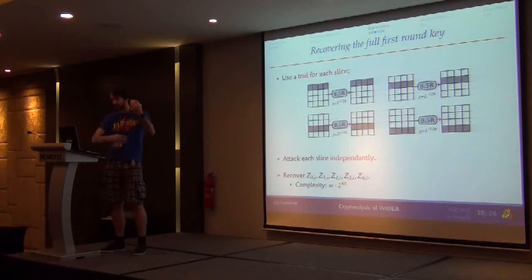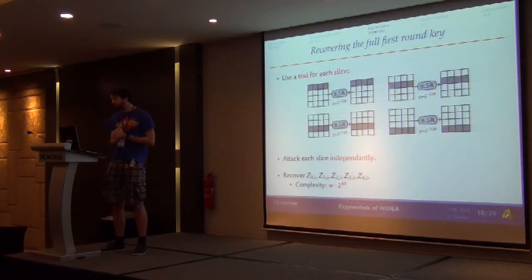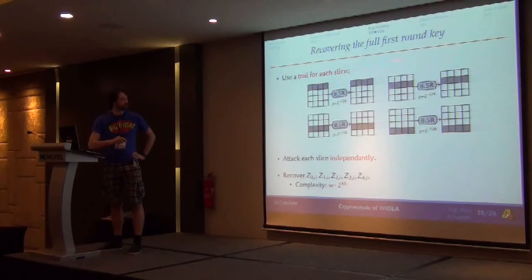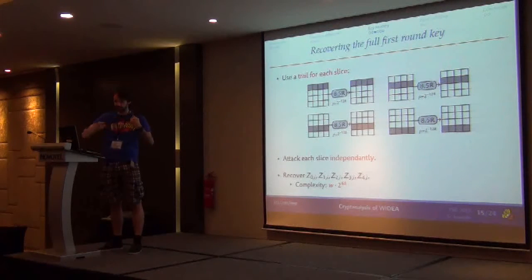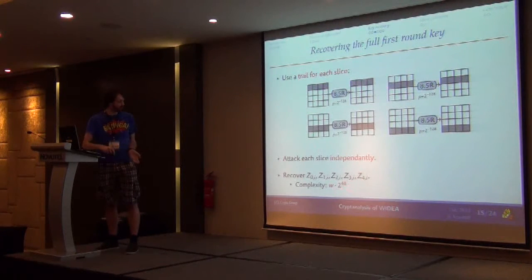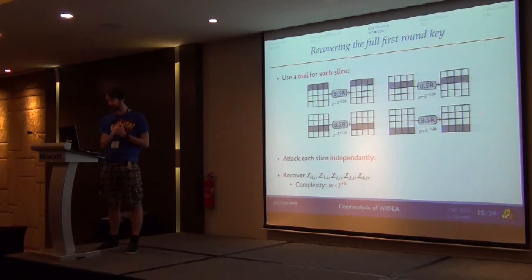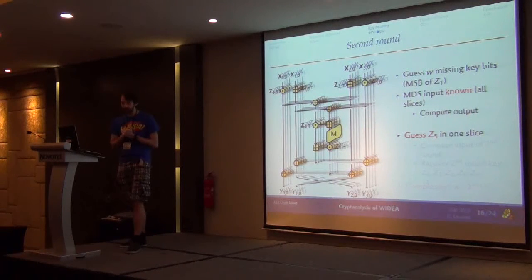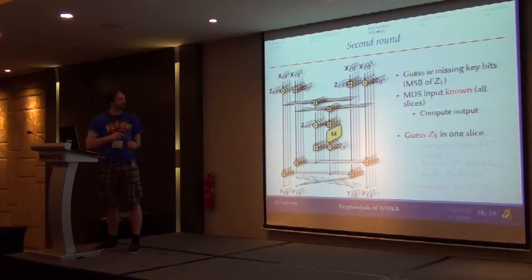So far we're only looking at one slice of IDEA, so we only recover the key for one slice. But we can do the same in each slice. We use four different trails, each with one active slice, recovering the key of a different slice one by one — four or eight times depending on the block cipher size. The total complexity for the first round keys is 2 times 2^{48}. Now we can assume we know the full key from the first round. There are just a few missing bits, but we guess them, so it's not a problem.